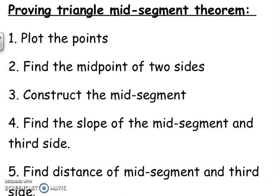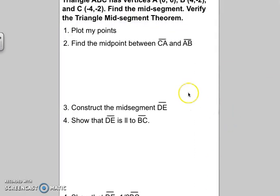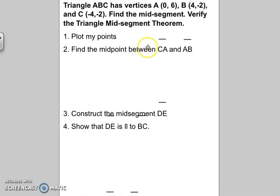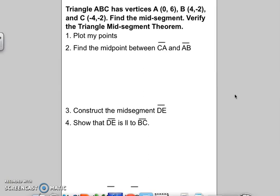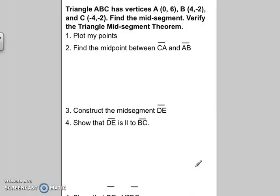You have triangle ABC with vertices A, B, and C. Find the mid-segment and verify that it is a mid-segment. First thing: plot your coordinate points on the graph. When you graph triangle ABC you should get a nice triangle, and the mid-segment is probably going to be somewhere in the middle. So plot your points, then find the midpoint of CA and AB. For the midpoint of CA, add the X's: 0 plus negative 4 over 2, and add the Y's: 6 plus negative 2 over 2.